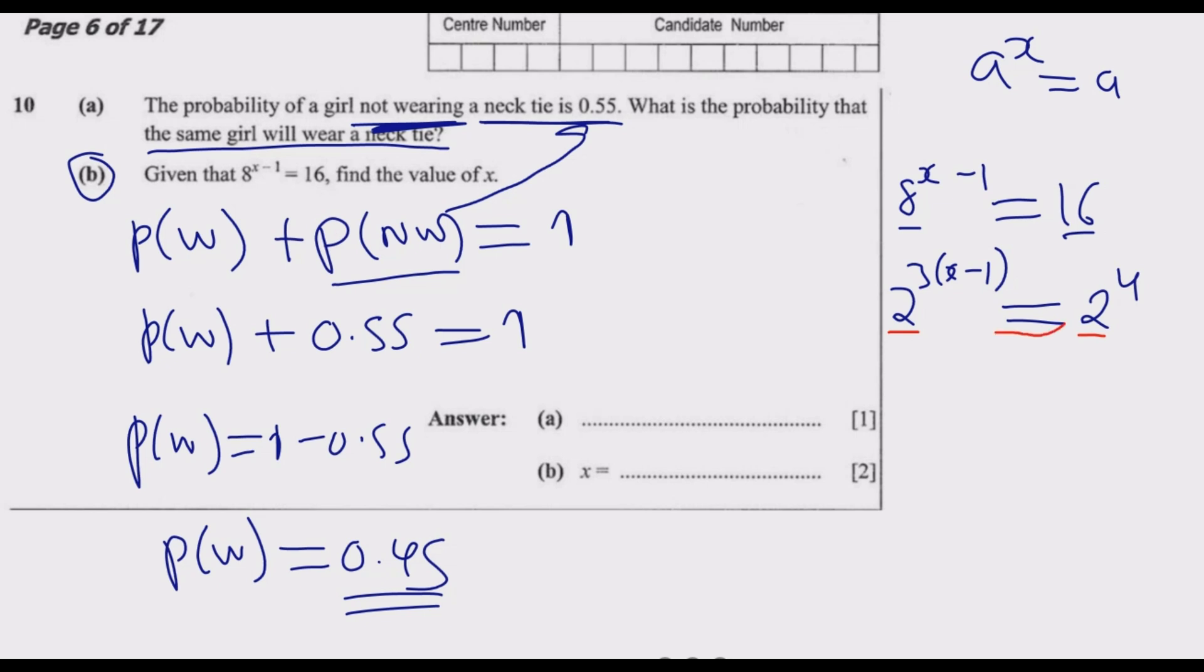Therefore we have 3 multiplied by (x-1) equals 4. Then 3x minus 3 equals 4. So 3x equals 4 plus 3, which gives us 3x equals 7. Then we divide by 3, so x equals 7 over 3, or 2 and 1/3 as the answer. This is how you answer question 10.